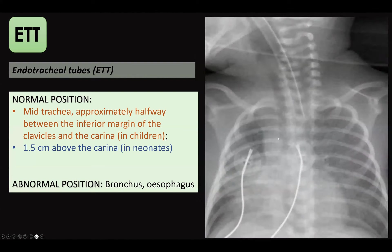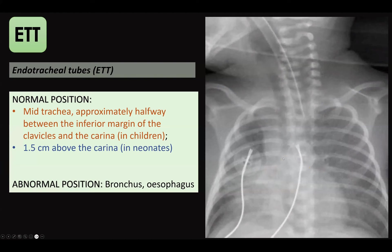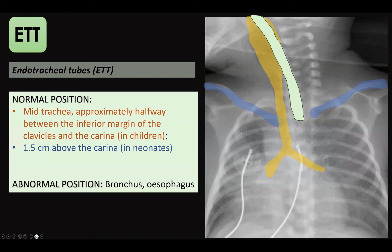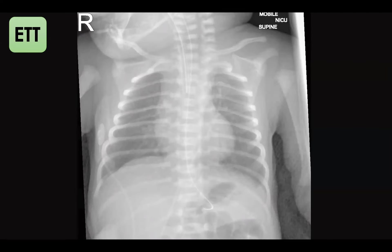In another example, the endotracheal tube is away from the expected site of insertion — this is actually esophageal intubation. Esophageal intubation is a very serious condition. We must pick it up because it can lead to hypoxemia, increase the risk of regurgitation and aspiration, cause brain injury, and even death. This is a very important issue to keep in mind when assessing endotracheal tube position in pediatric or adult patients.